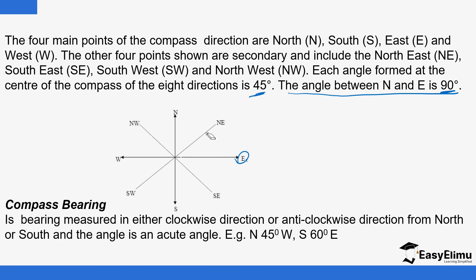So that brings us to what we are calling compass bearing — the bearing measured in either clockwise or anticlockwise direction from the north or south, and the angle should always be acute. So if you say 45 degrees north towards west, you mean this angle here — that is counterclockwise. When you say 60 degrees south towards east, south towards east means this angle here — and again that is counterclockwise.